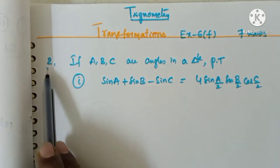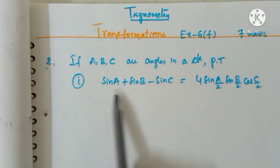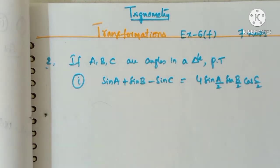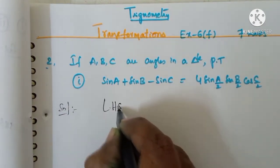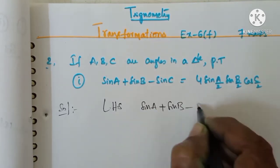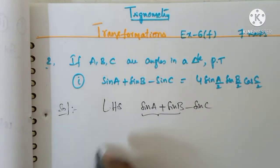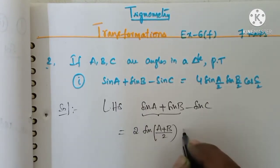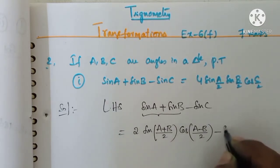Second question: if A, B, C are angles in a triangle, prove that — first bit — sin A plus sin B minus sin C equals 4 sin(A/2) sin(B/2) cos(C/2). We take LHS: sin A plus sin B minus sin C. By using the formula, sin A plus sin B equals 2 sin((A+B)/2) cos((A-B)/2), minus sin C.